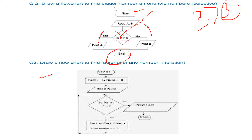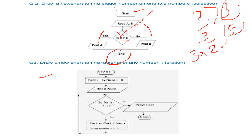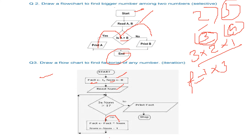Now a flowchart for factorial. For example, factorial of 3: we start with n, subtract 1 to get 2, subtract 1 again to get 1, and 3 × 2 × 1 is the factorial. In the flowchart, we start, assign fact = 1 and read num. If num is greater than 1, we assign fact = fact × num, then reduce num by 1. We reiterate — this is a loop.